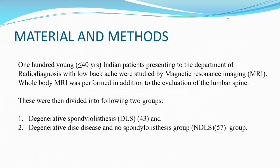Materials and methods: 100 young Indian patients presenting to the department of radiodiagnosis with low backache were studied by MRI. Whole body MRI was performed in addition to evaluation of the lumbar spine. Patients were divided into two groups: degenerative spondylolisthesis (DLS), comprising 43 patients, and degenerative disc disease with no spondylolisthesis (NDLS), comprising 57 patients.